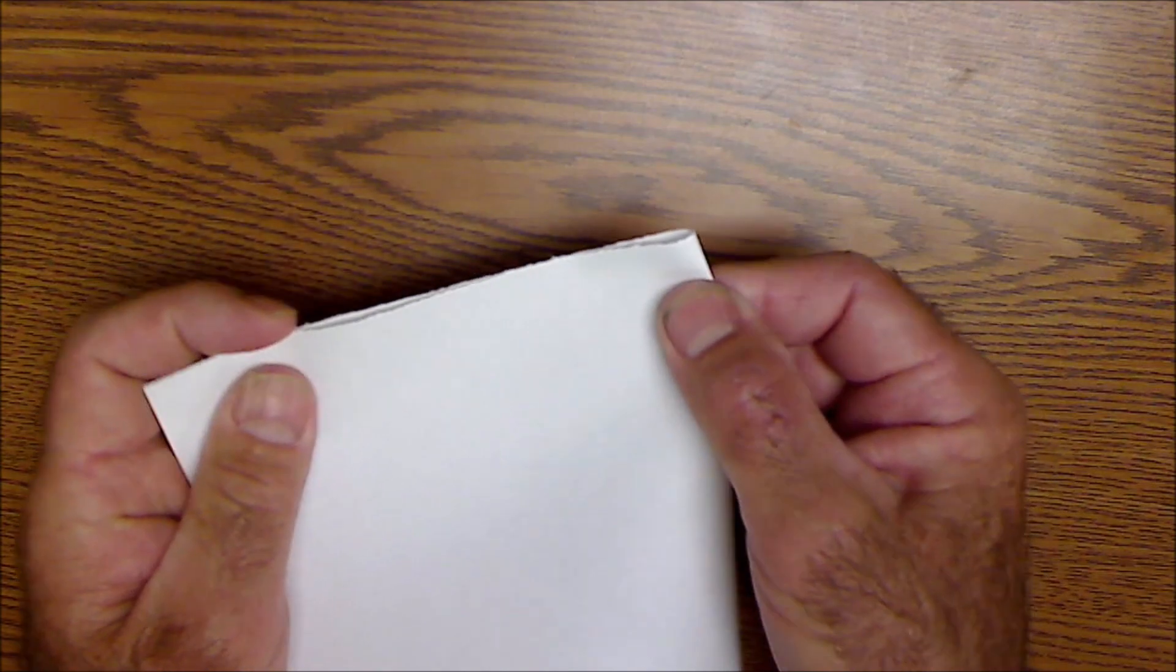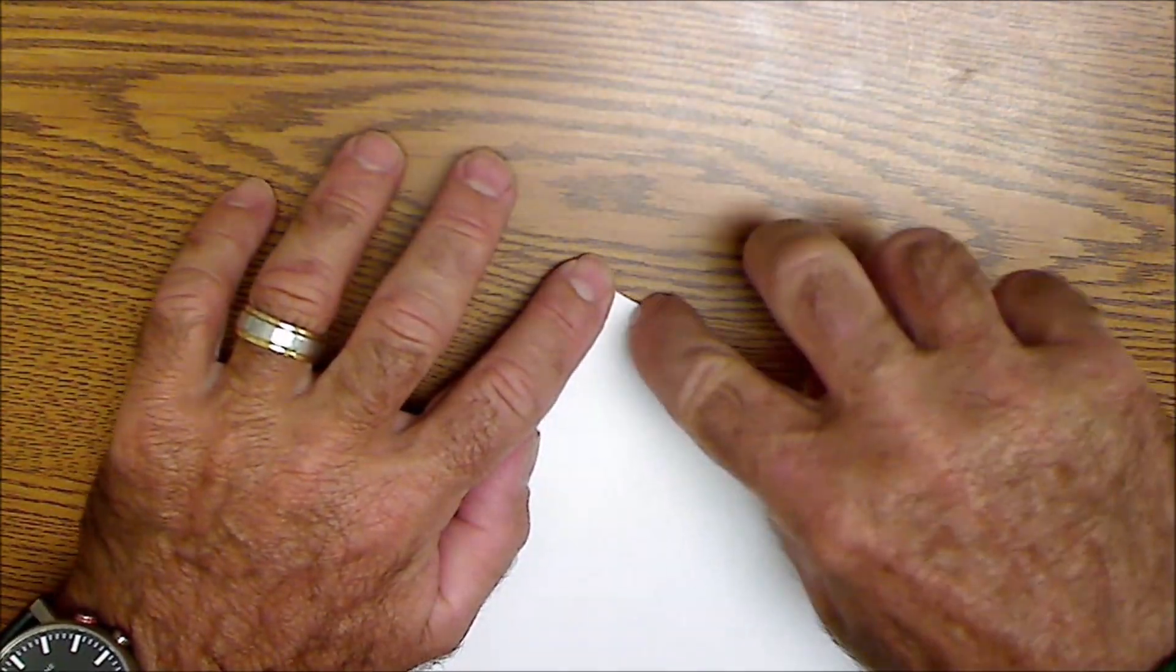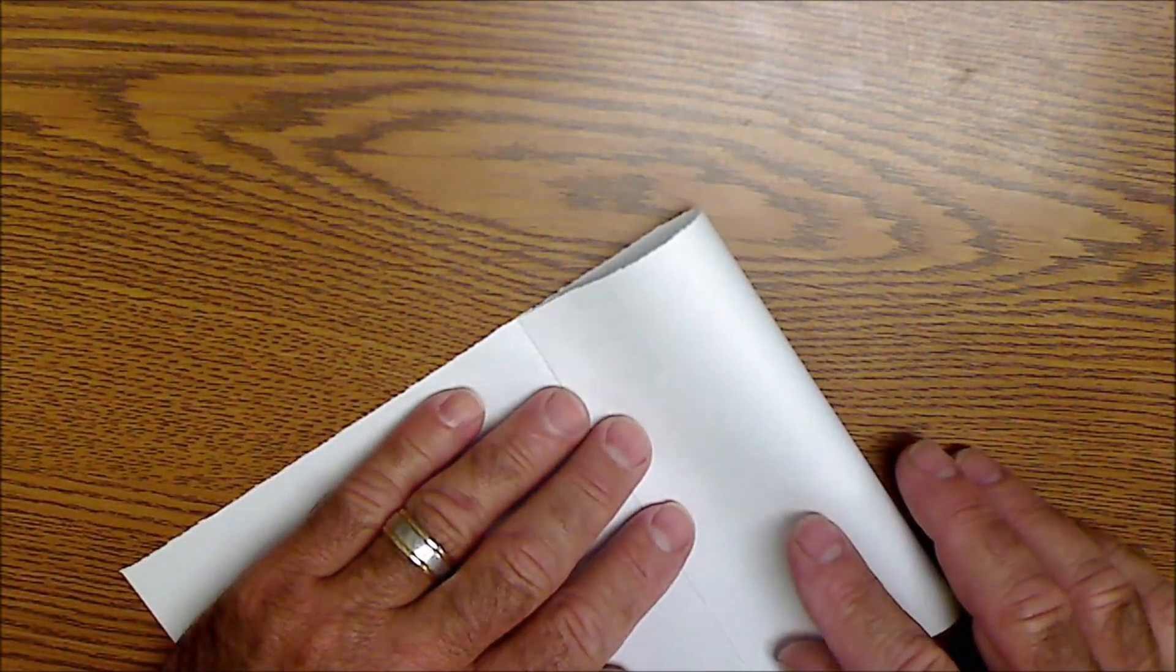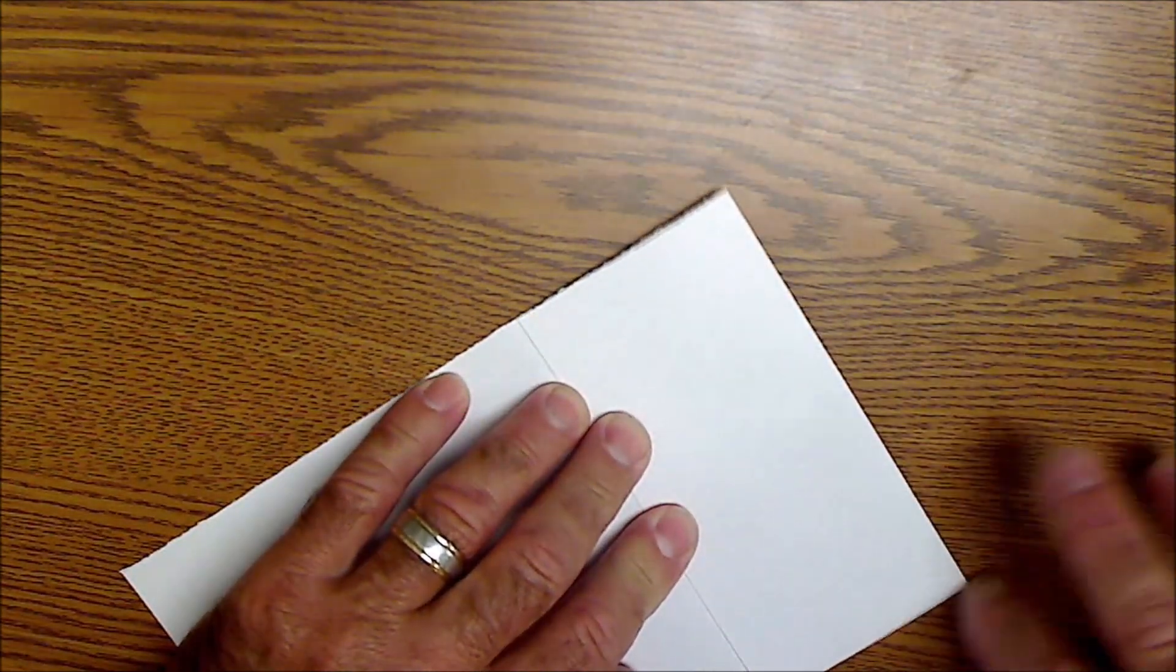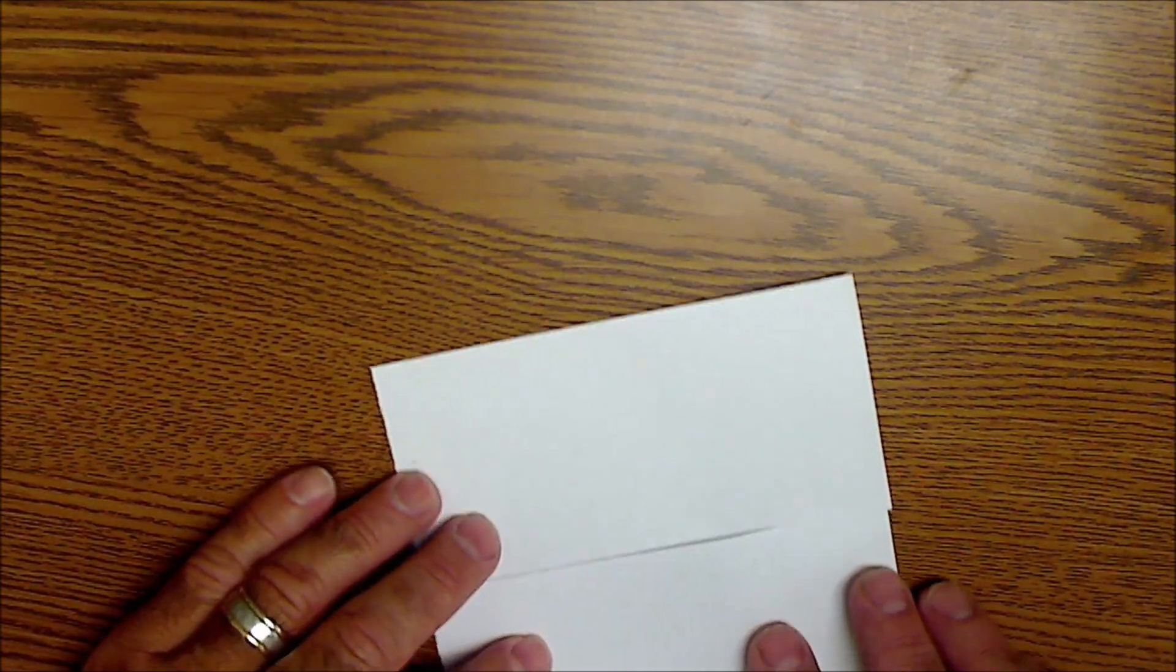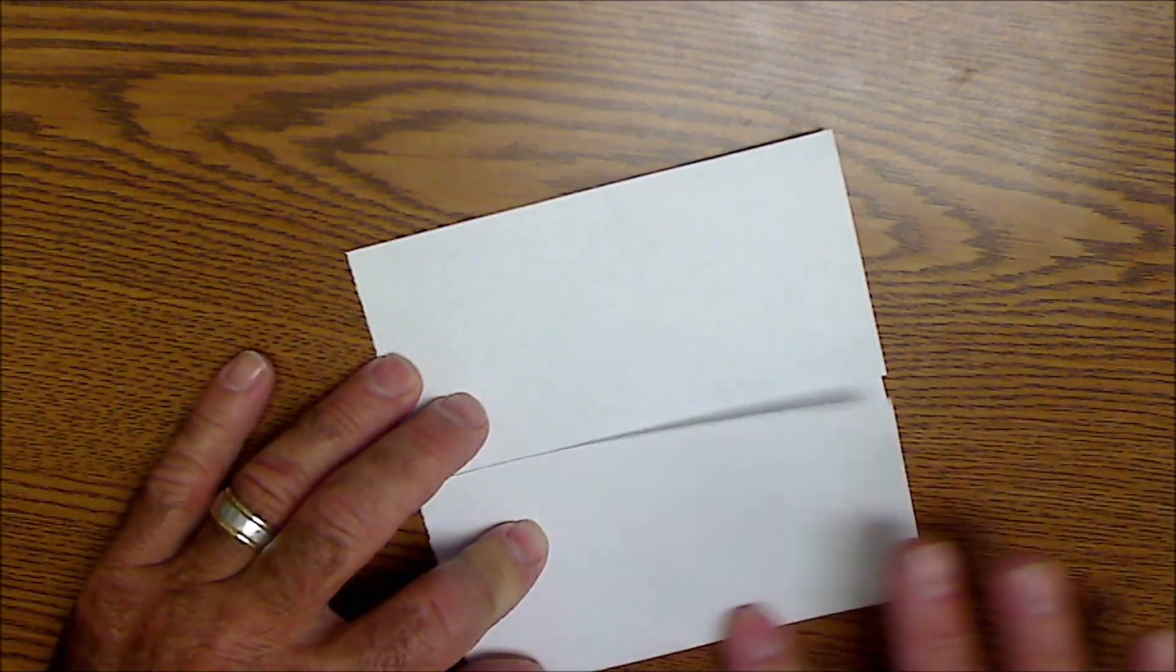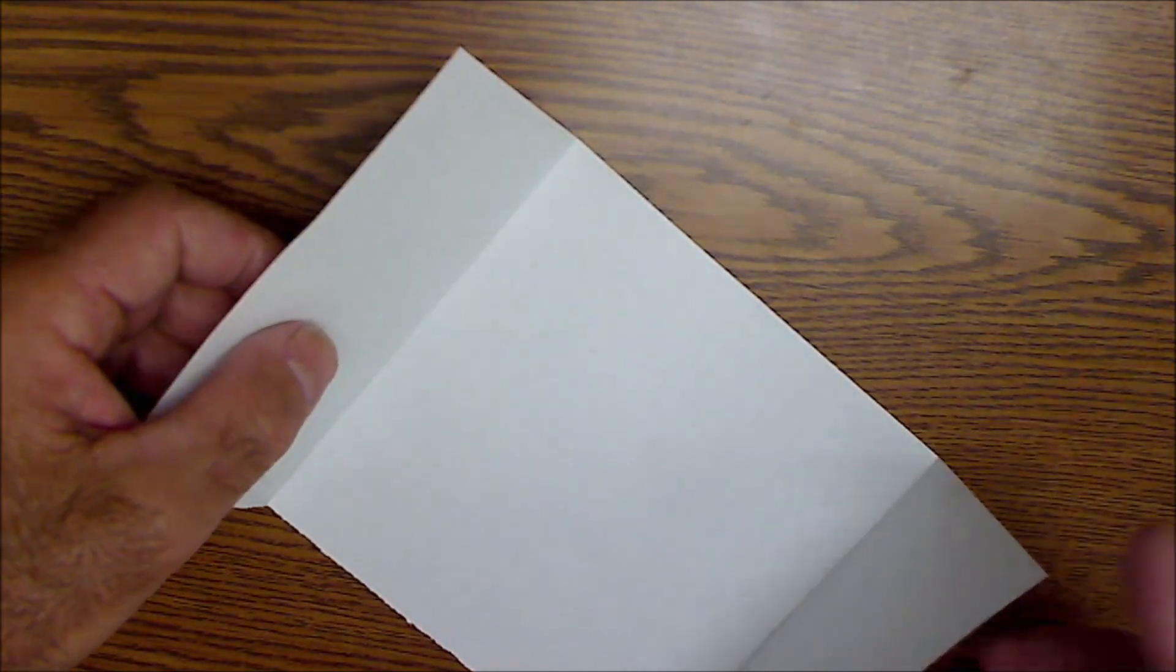And then from there, I'm going to fold it in half once. I do want nice, crisp fold lines. I'm going to fold it in half a second time, and fold it in half again here. So I'm going to fold it in fourths. Open it back up.